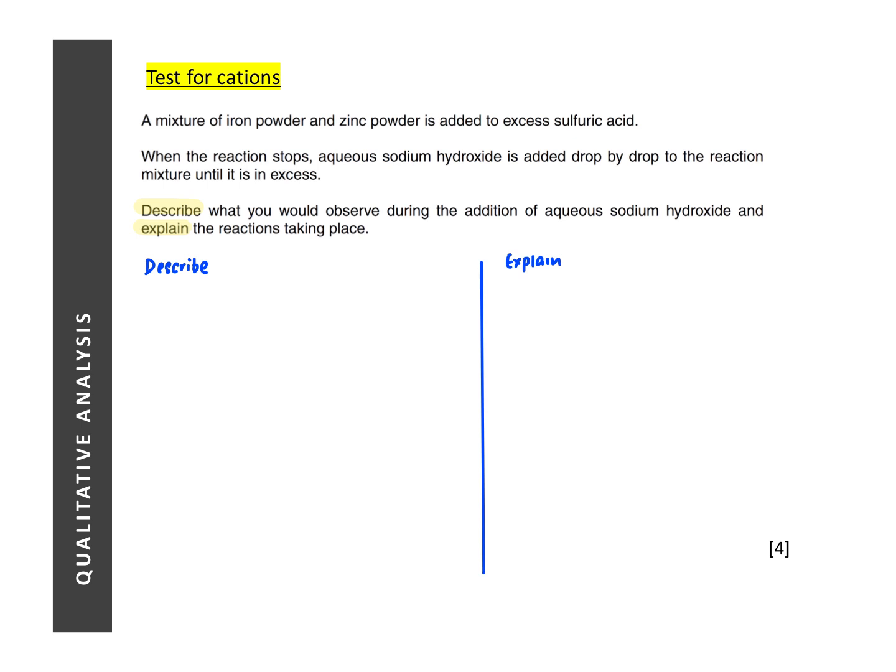So over here, this question, we are given a mixture of iron and zinc powder being reacted with sulfuric acid. So after the reaction, what we have would be iron 2 sulfate and zinc sulfate, both of which are soluble in water. So meaning we would have an aqueous mixture containing iron 2 ions and zinc ions. So the question now is, what happens when you add sodium hydroxide drop by drop until it is in excess? So if you know your QA well enough, that is asking you, that's describing the test for cations. So you just need to describe what happens, or the observations for iron 2 ions, and the observation for zinc.